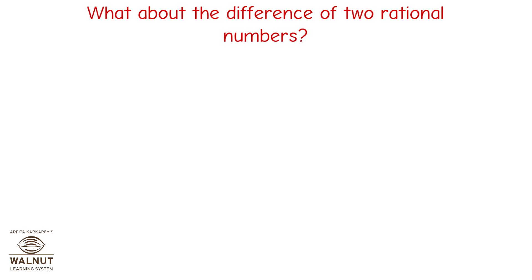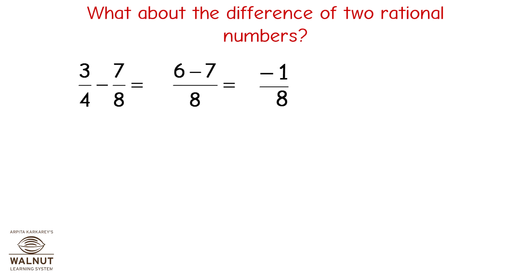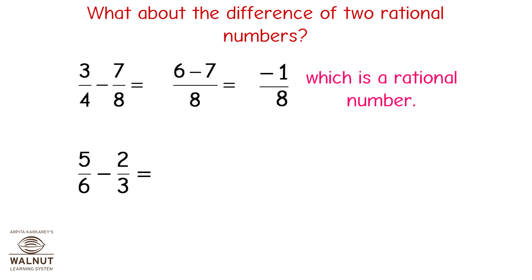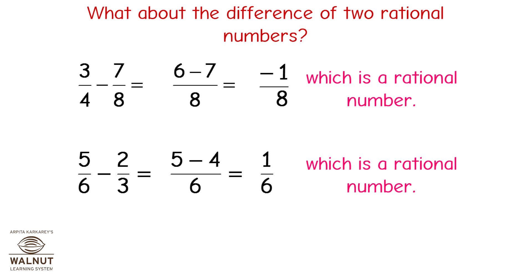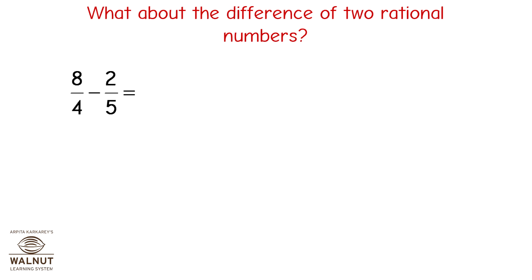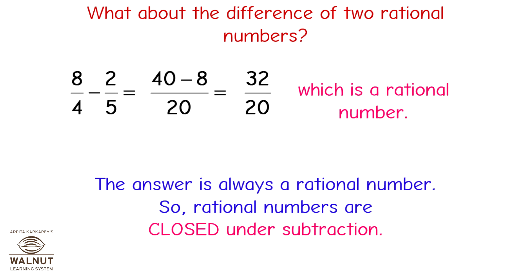What about the difference of two rational numbers? 3 upon 4 minus 7 upon 8 equals 6 minus 7 upon 8, which is minus 1 upon 8 — a rational number. 5 upon 6 minus 2 upon 3 equals 5 minus 4 upon 6, which is 1 upon 6 — a rational number. 8 upon 4 minus 2 upon 5 equals 32 upon 20 — a rational number. So rational numbers are closed under subtraction.